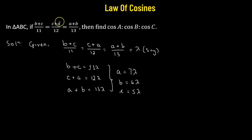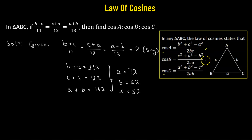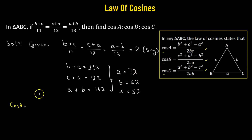For that, we'll be using the law of cosines. So if we have a triangle ABC whose sides opposite to angles A, B, and C are represented by lowercase a, b, and c respectively, then cosine of A, cosine of B, and cosine of C are given by their respective formulas. Substituting the values 7 lambda, 6 lambda, and 5 lambda, cosine A comes out to be 1 over 5.